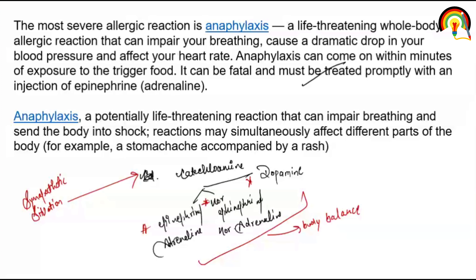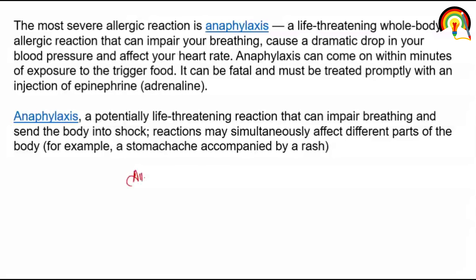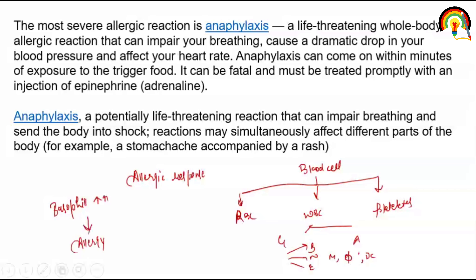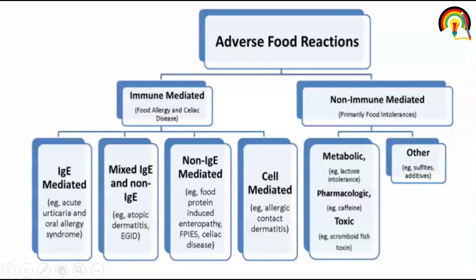Agar aapko kabhi allergic response ho jaye — aap logon ne blood cells padhe honge, jisme RBC, WBC aur platelets ke baare mein dekha hoga. WBC ke andar Basophil, Neutrophil, Eosinophil, Monocyte, Macrophage, Dendritic Cell hote hain. Agar body mein Basophil ka number zyada hai, iska seedha seedha matlab hai ki aapko allergic response hai. Allergic response mein do hi kaam karte hain: ek hota hai Basophil aur dusra hai Histamine.